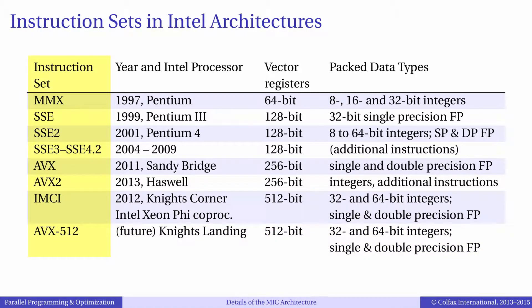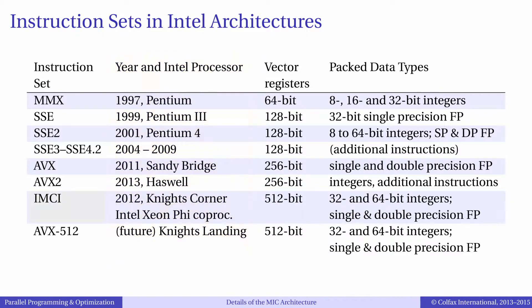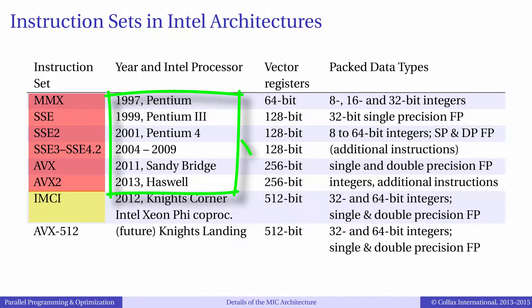To the parallel programmer, the instruction set is important for two reasons. First, the programmer may target a specific vector length in the application code so that the compiler can translate the high-level language code into appropriate vector instructions. The second reason has to do with code portability. If the programmer wishes to use vector instructions without the help of the compiler — for example, using assembly — it is important to understand which architectures will be able to run that code. IMCI instructions are not a superset of AVX or SSE2. Therefore, applications compiled for a Xeon CPU cannot run on the first-generation Xeon Phi, and vice versa.